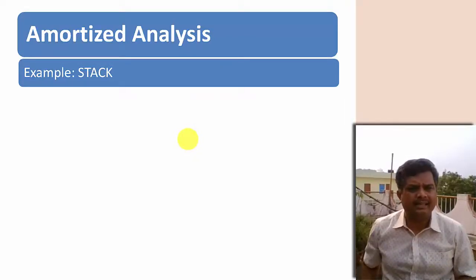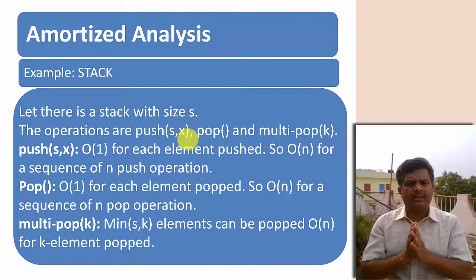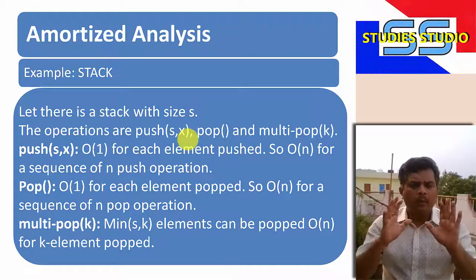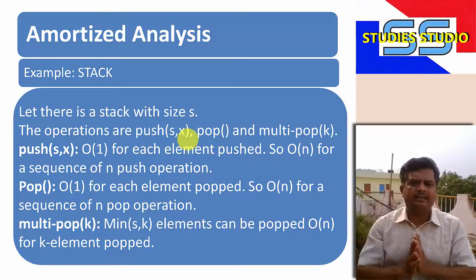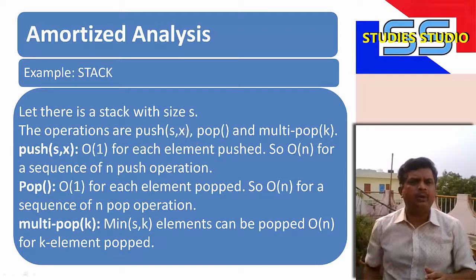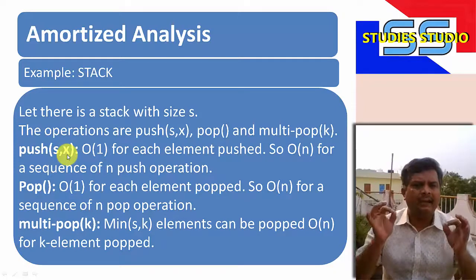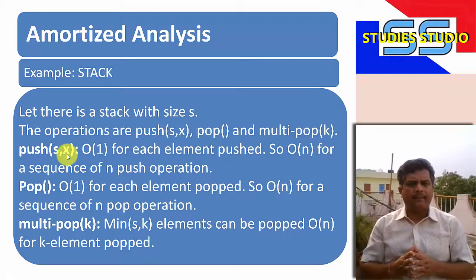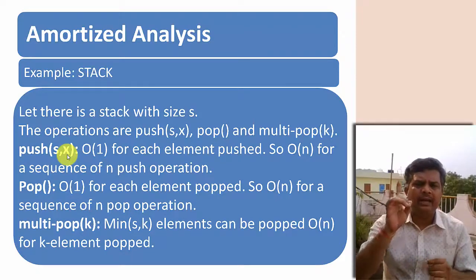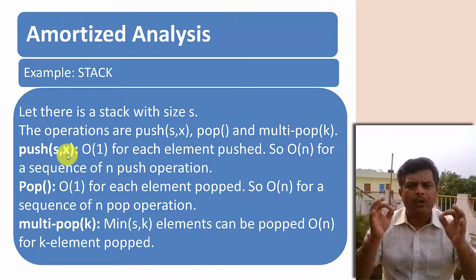Let us take the stack data structure as an example to understand amortized analysis. When talking about a stack, there are three operations involved: push, pop, and multi-pop. For push, we assume the size of the stack is s; when we push element x to stack s, for every element pushed it takes O(1) time, so to push an element it takes O(1) time — written as O(n) for n operations.